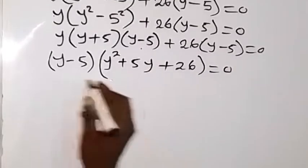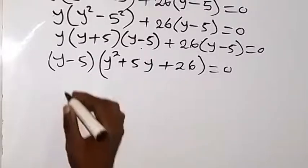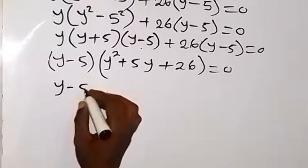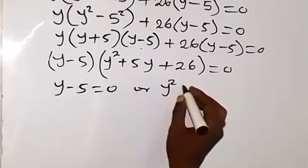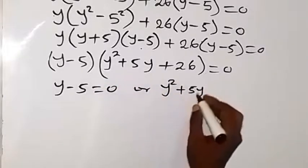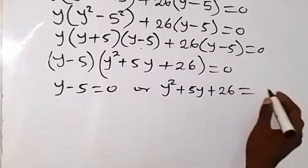Then from here, we can see that these 2 multiply and the result is 0. Either of them will be 0. So we have y minus 5 is equal to 0, or we have y squared plus 5y plus 26 is equal to 0.